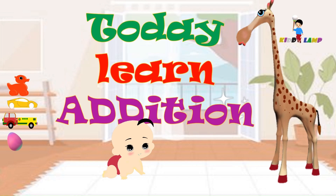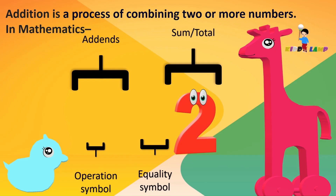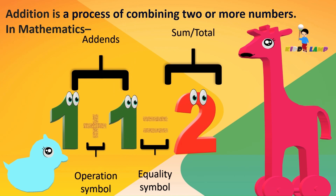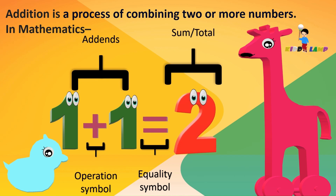Today, learn addition. Addition is a process of combining two or more numbers. In mathematics, 1 and 1 are addends. 2 is the sum of addends. The operation symbol is plus and the equality symbol is equal.